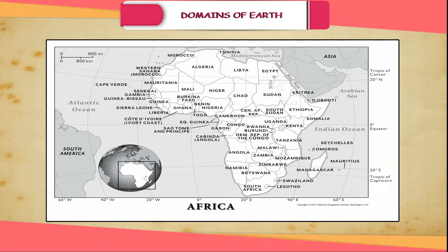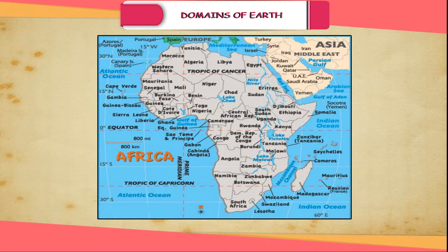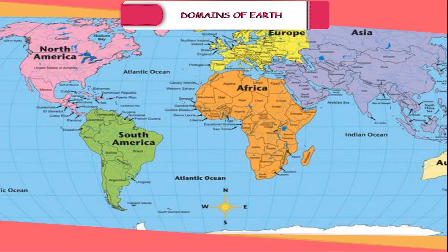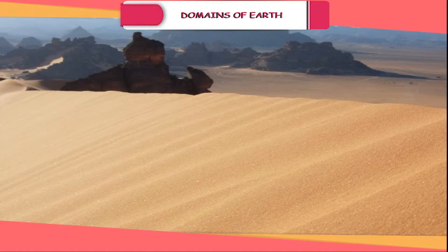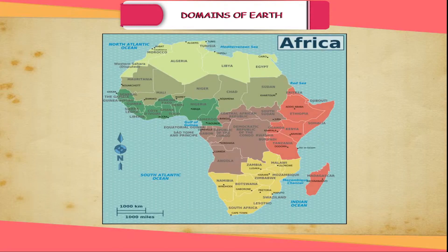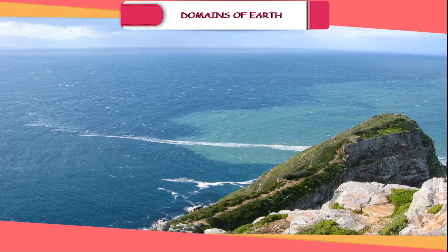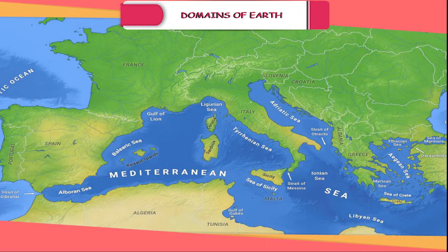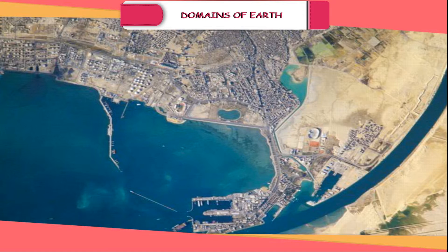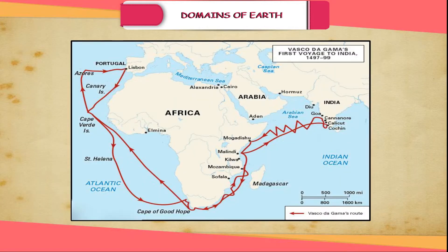Africa is the second largest continent of the world. The equator passes through the middle of the continent; however, a large part of Africa lies to the north of the equator. It is the only continent through which the equator, the Tropic of Cancer, and the Tropic of Capricorn pass. The world's largest hot desert, the Sahara Desert, is located in Africa. The world's longest river, the Nile, flows through Africa. The Strait of Gibraltar in the northwest and the Mediterranean Sea separate it from the European continent, while the Suez Canal separates it from Asia. It is the busiest ocean route today and has reduced a distance of about 7,000 kilometers between India and Europe.